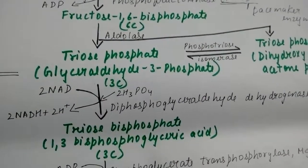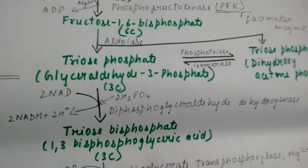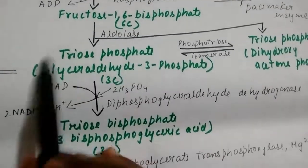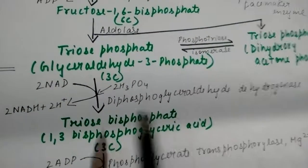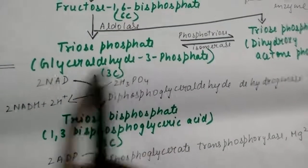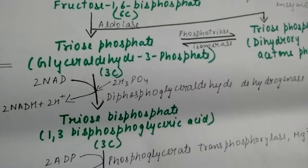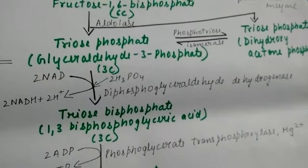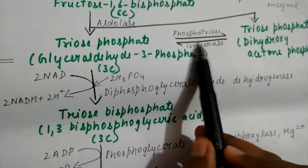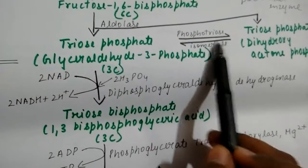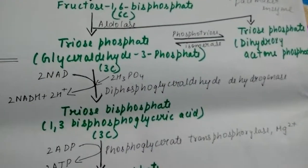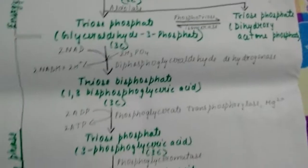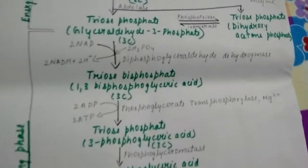Then fructose-1,6-bisphosphate is converted into triose phosphate in the presence of aldolase. The triose phosphate is a three-carbon compound with a phosphate group — glyceraldehyde-3-phosphate. It is interconvertible with dihydroxyacetone phosphate via phosphotriose isomerase. Then the second phase starts, that is the energy-producing phase.